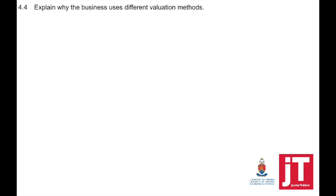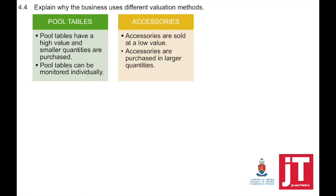Question 4.4: explain why the business uses different valuation methods. Pool tables have a high value and smaller quantities are purchased, so they can be monitored individually using specific identification. Accessories are sold at low value and purchased in larger quantities, making weighted average more practical.